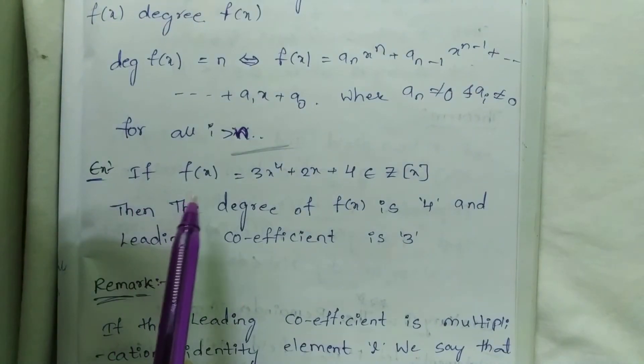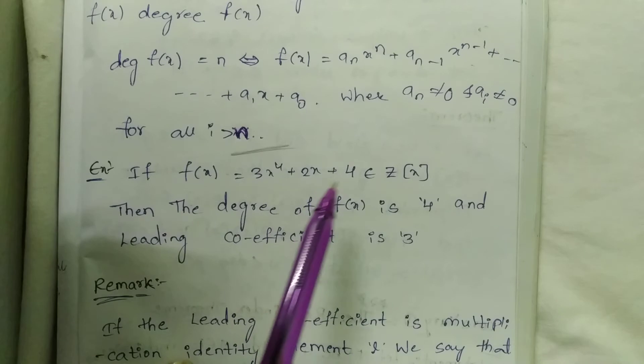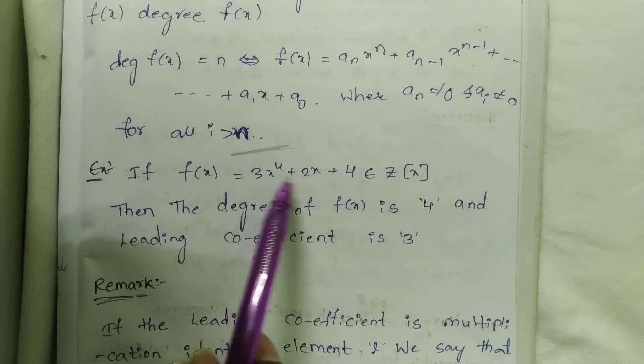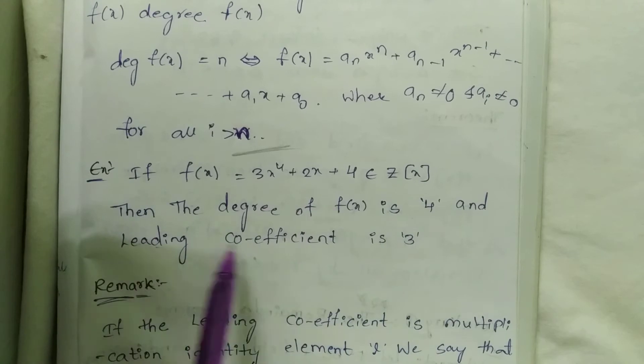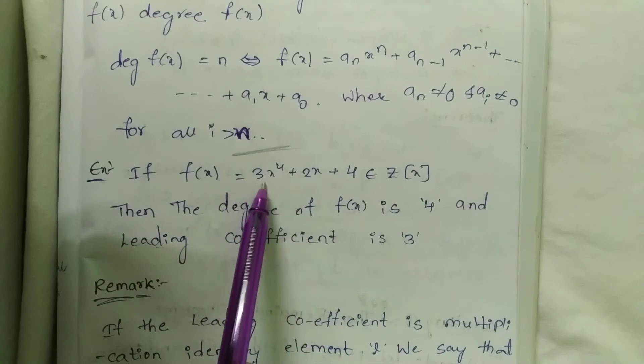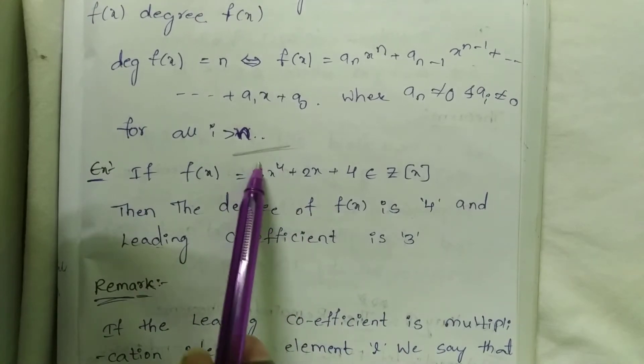Example: If f(x) = 3x⁴ + 2x + 4 ∈ ℤ[x], what is the highest degree? 4. The degree of f(x) is 4. And the leading coefficient? The x⁴ coefficient is 3. This is the leading coefficient.